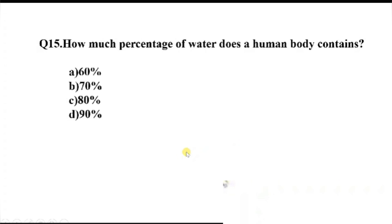Question number 15. How much percentage of water does a human body contains? Option A, 60%. B, 70%. C, 80%. D, 90%. The right answer, Option B, 70%.